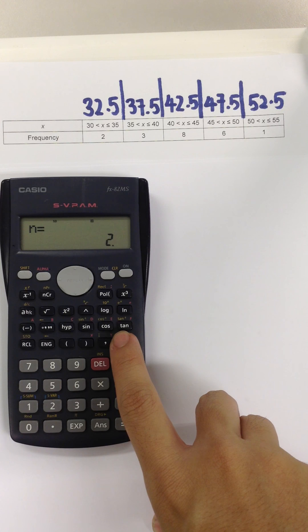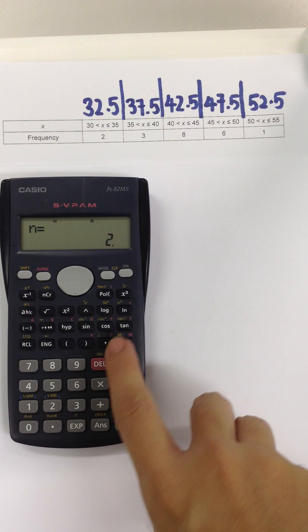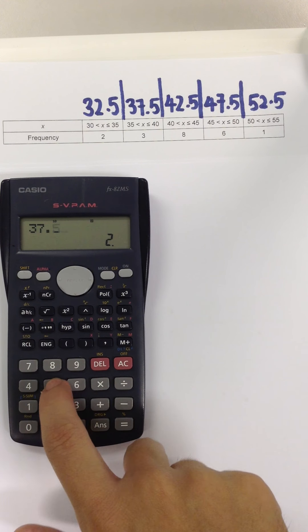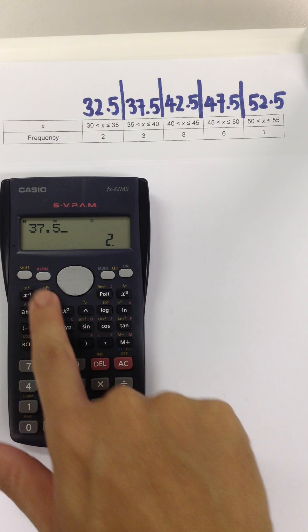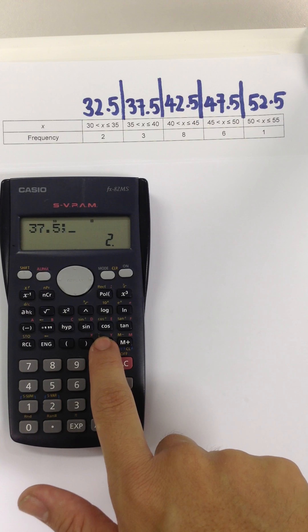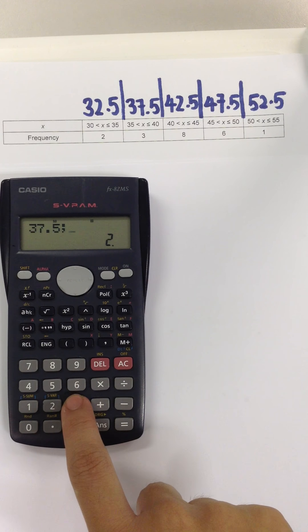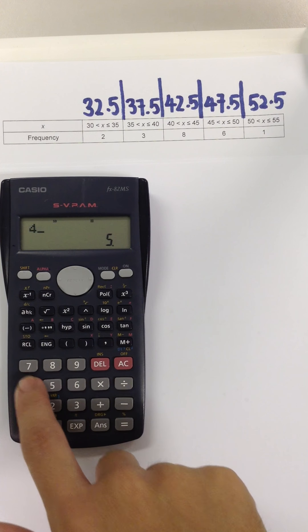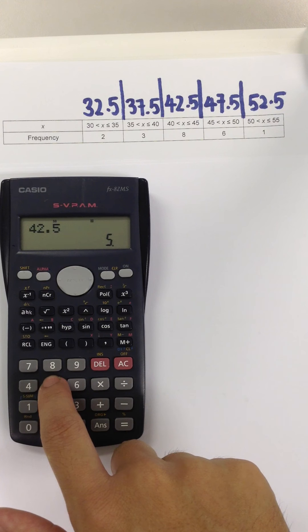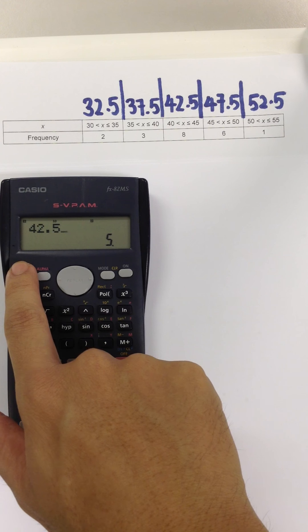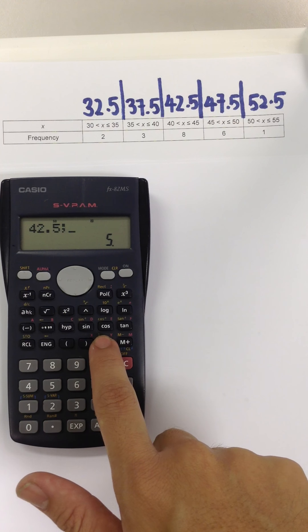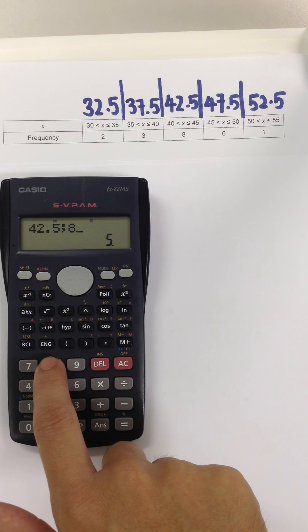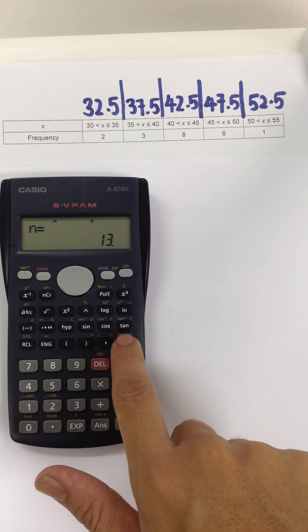Repeat this for the rest of the data. 37.5, shift, comma, frequency 3, and plus. 42.5, shift, comma, frequency is 8, and plus.